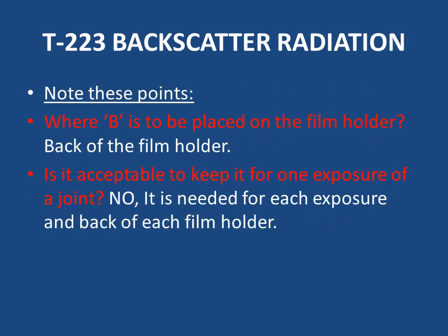Key notes: The letter B is placed on the back of the film holder. It is required for each exposure and on the back of each film holder — not just one exposure per joint. For a pipe joint requiring multiple exposures for full coverage, the letter B must be on the back of each film holder for every exposure. In other words, B is always needed on the back of each film holder.